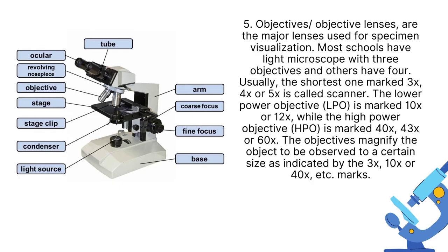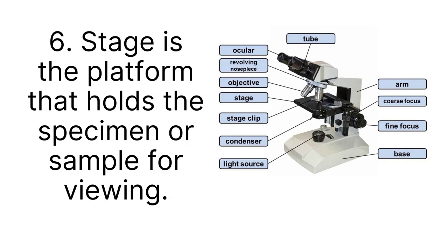Objective lenses are the major lenses used for specimen visualization. 3x, 4x, or 5x are also known as scanner. Low power objective or LPO is marked as 10x or 12x. While the high power objective HPO is marked 40x, 43x, or 60x.